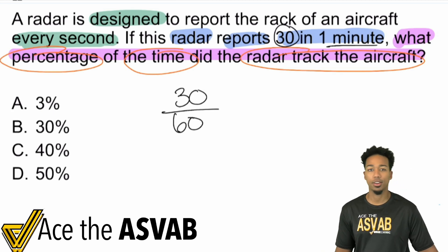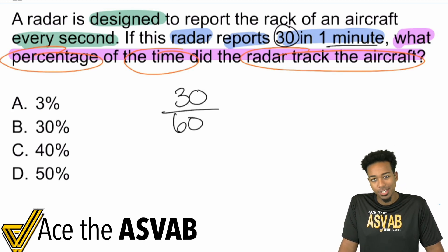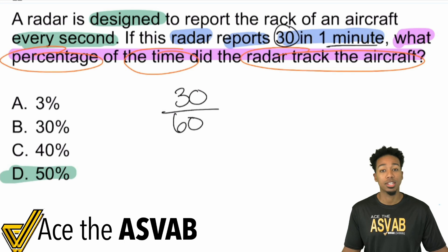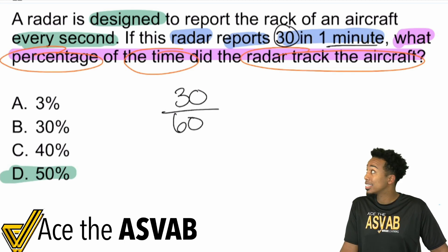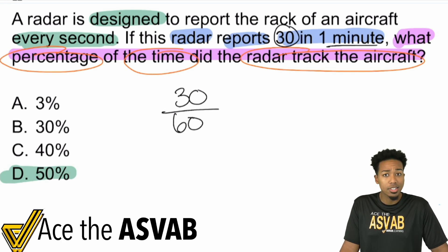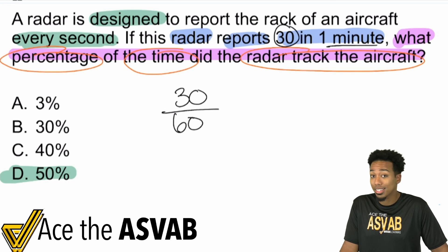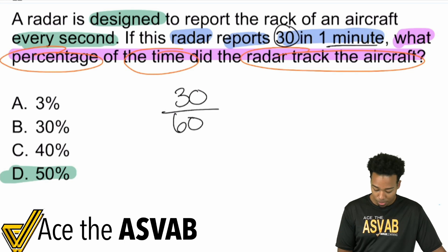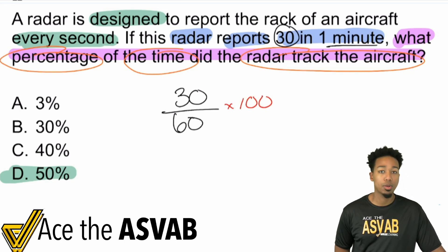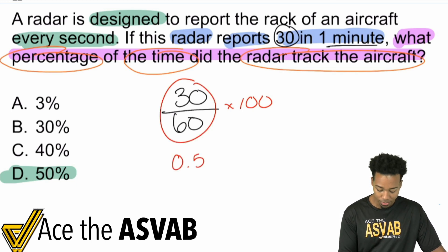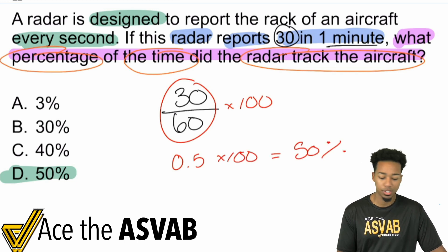30 out of 60 — what is that? That's half. What's half in terms of a percentage? 50%. It's actually tracking 50% of the time. It's supposed to do it once every second, which is 60 times in a minute, but this one's only doing it 30 times in one minute. 30 out of 60 is 50%. If you don't know how to turn a fraction into a percent, simply multiply by 100. 30 divided by 60 gives you the decimal 0.5, and then you multiply that by 100, which gives you 50%.